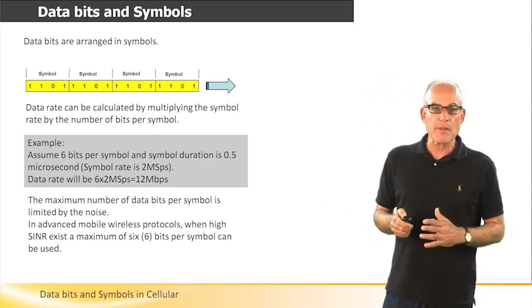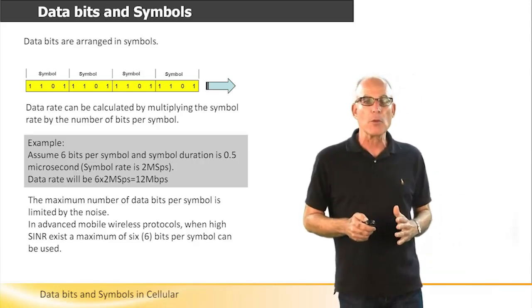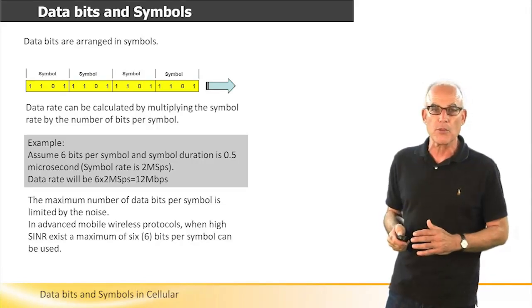The maximum number of data bits per symbol is limited by the noise. In advanced mobile wireless protocols, when high SINR exists, a maximum of six bits per symbol can be used.